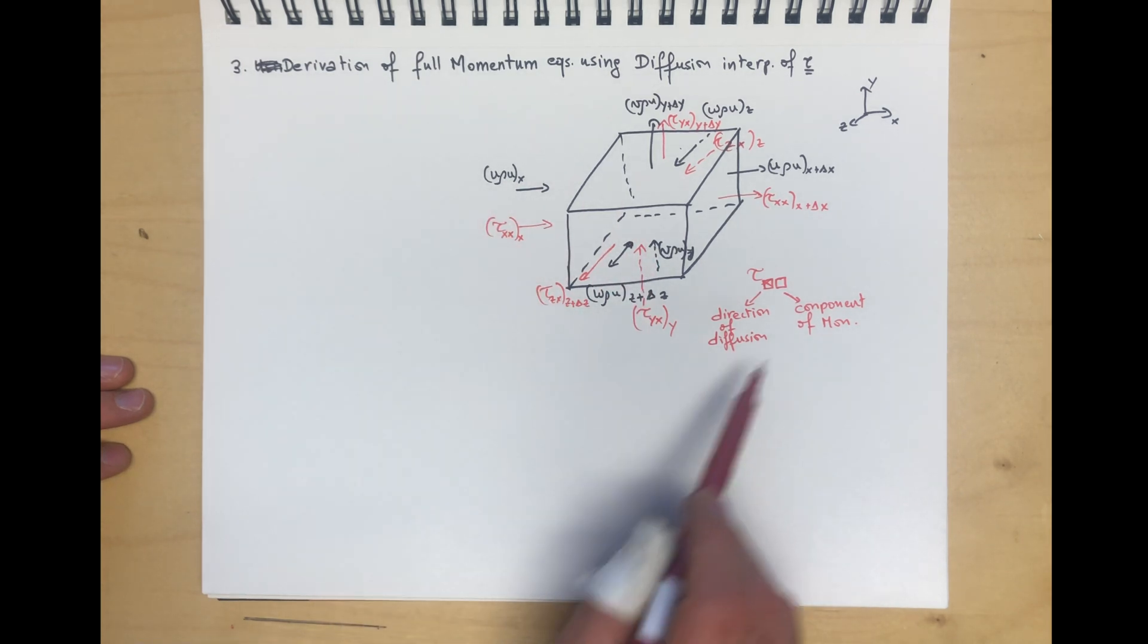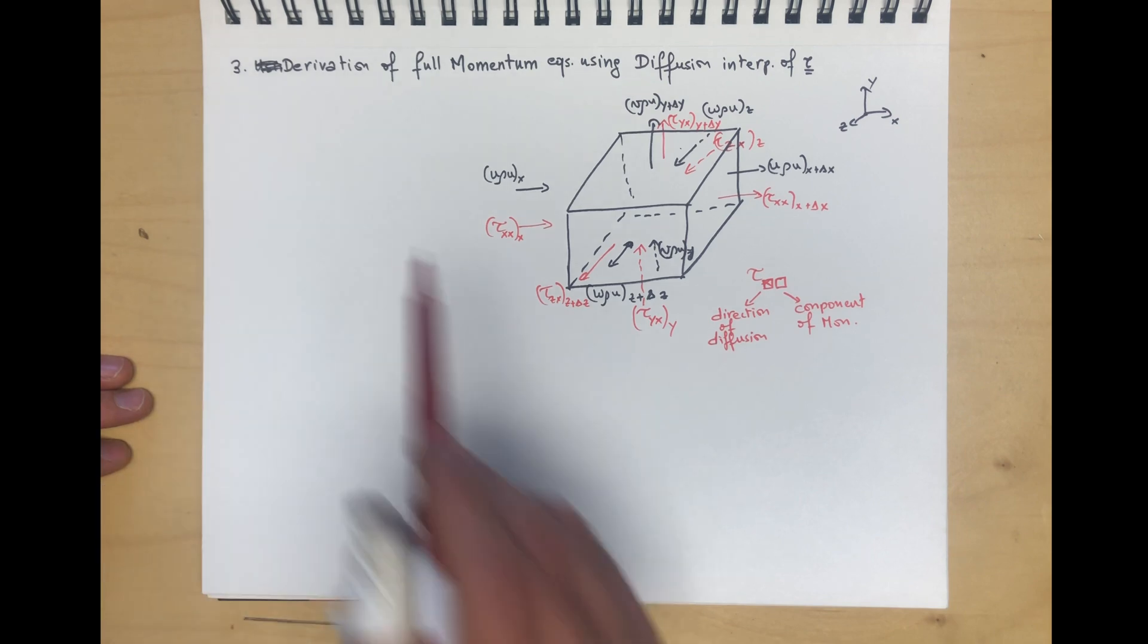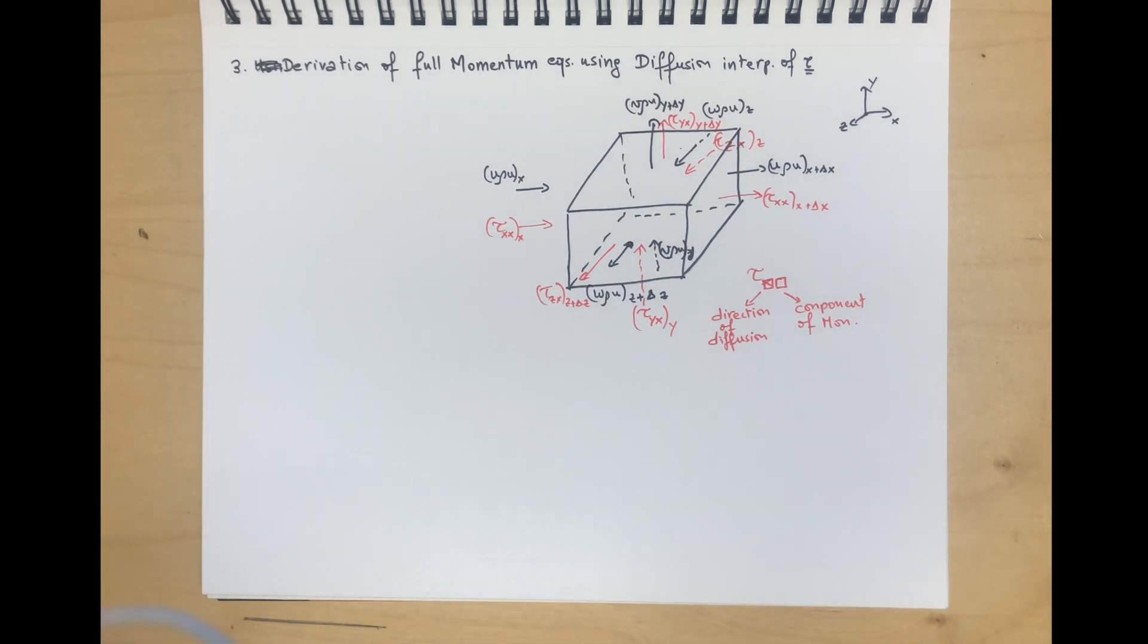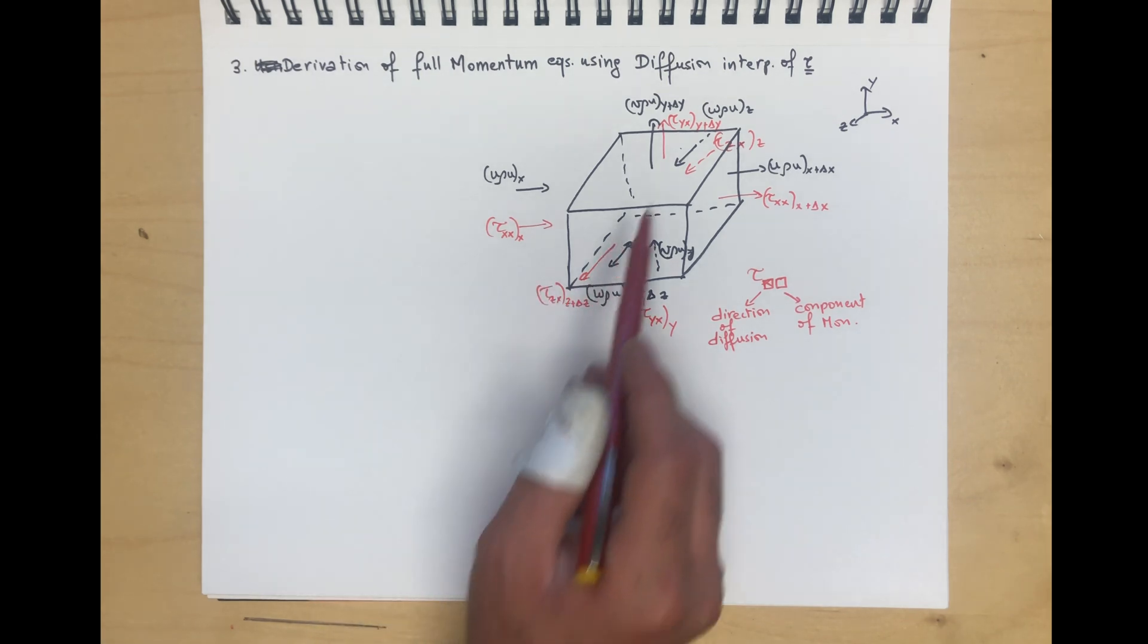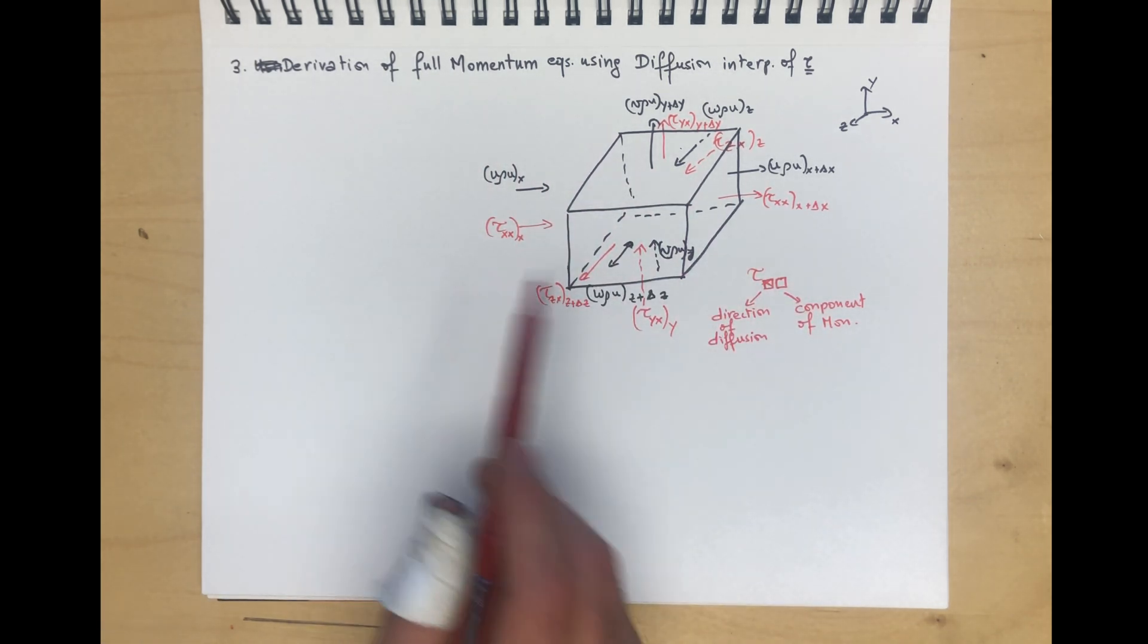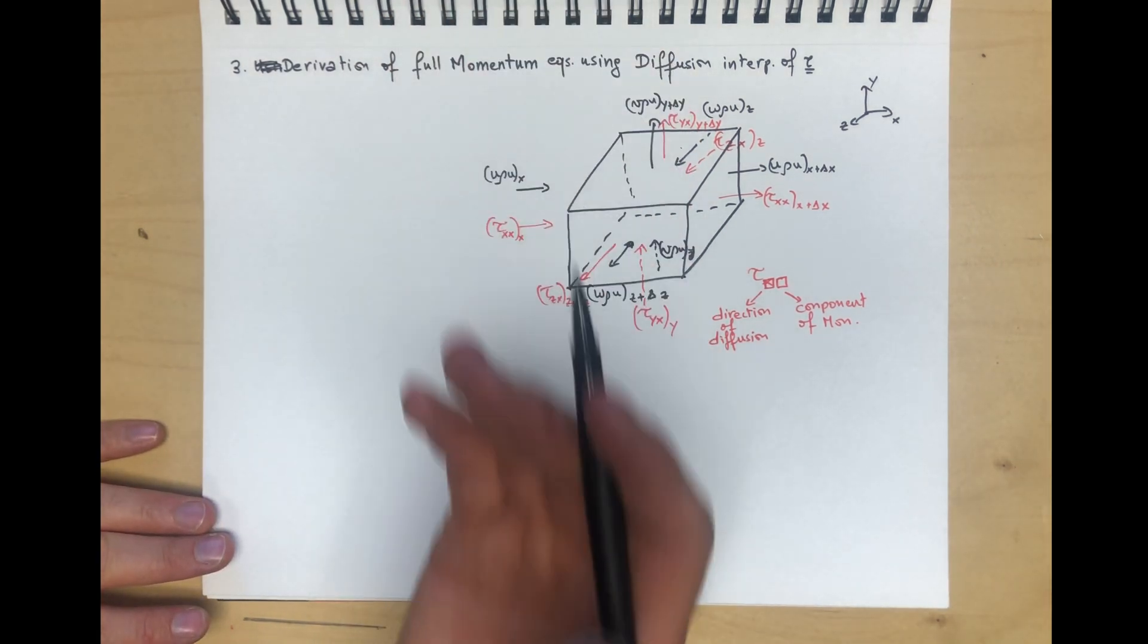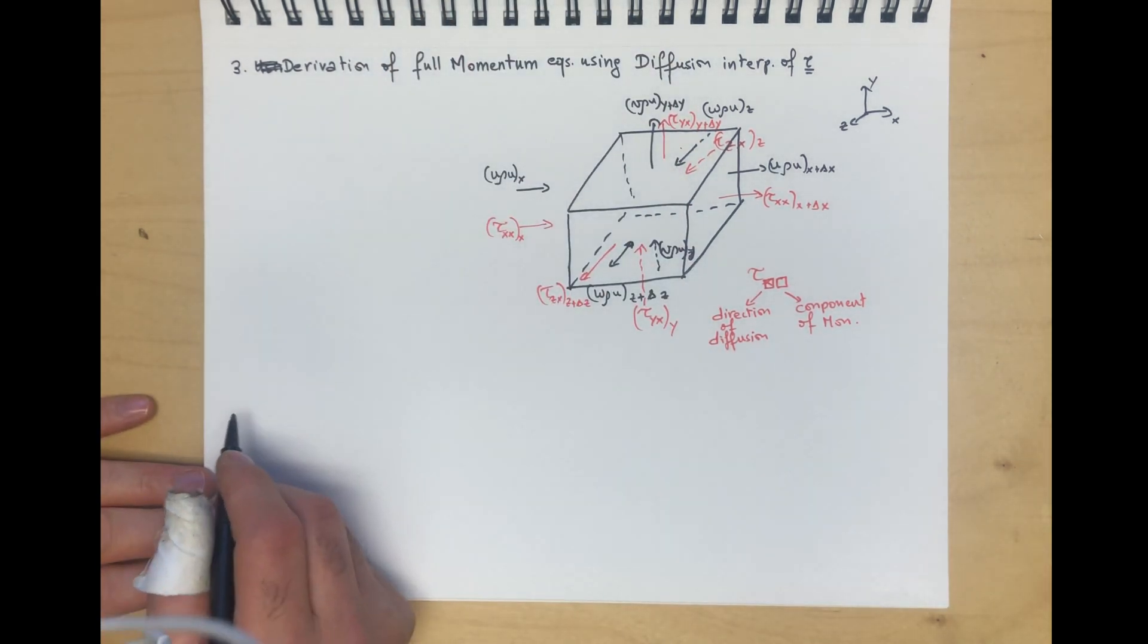The whole thing gets added up as rate in minus rate out. The only forces left are pressure and gravity. The key difference is that the stress tensor, or momentum diffusion tensor, has a negative sign in front of it. That's a traditional difference between equations derived from a mechanics approach versus a chemical engineering approach.